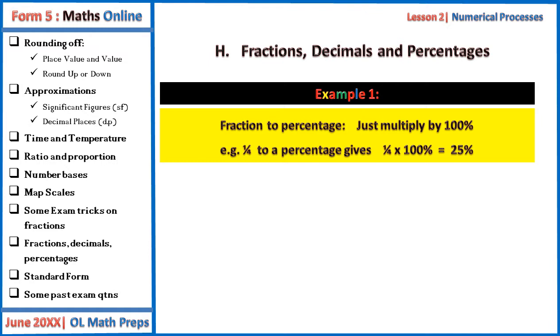Equally note that to convert from fractions to percentages, we just multiply by 100%. For example, one-quarter to a percentage gives one on four times 100%, which is equal to 25%.